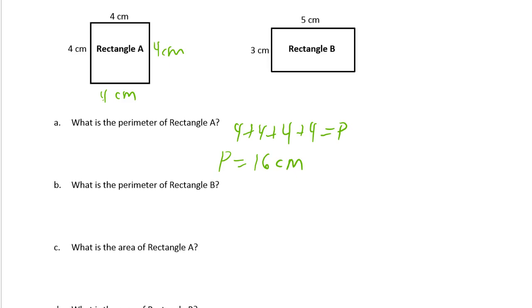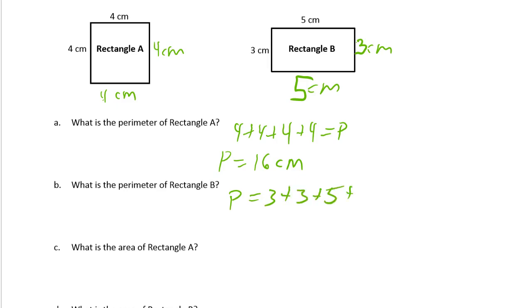What is the perimeter of rectangle B? It's two 3s and two 5s, because there's a 3 here and a 5 here. So it's two 3s and two 5s. That's P equals 3 plus 3 plus 5 plus 5, and using those doubles — 6 plus 10 — it's 16. 16 centimeters.